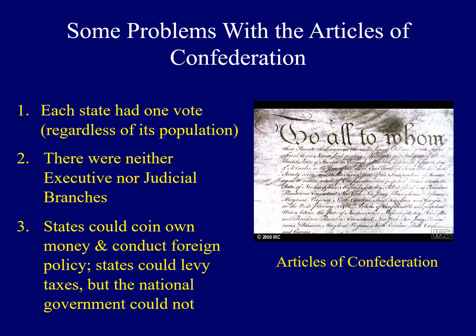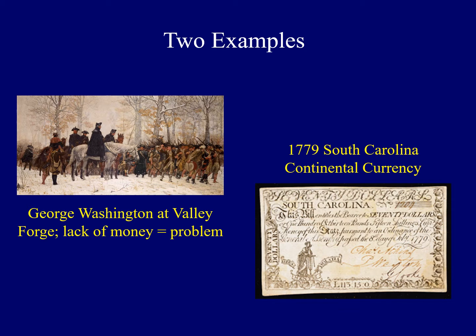Our tax dollars go toward a range of things. On the left, we see an image of George Washington at Valley Forge. During the Revolutionary War, one of the problems he continually faced was a lack of funding for things like uniforms and boots for his soldiers. On the right, we see some currency from the state of South Carolina. In Europe you use the Euro, in Mexico they use Pesos, but in the United States there were multiple currencies — South Carolina, New York, Pennsylvania each had its own currency. It created chaos for business owners.